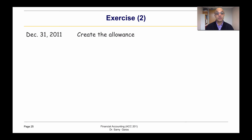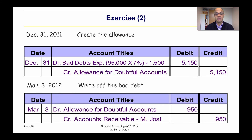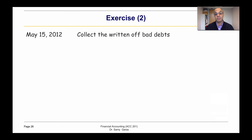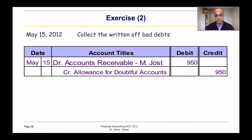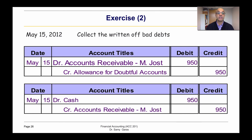Let us look at the journals. On December 31st, to create the allowance, we debit bad debt expense and credit allowance — remember, because the balance was credit we subtract. On March 3rd, to write off the account, we debit allowance and credit accounts receivable by 950. But the customer came back on May 15th and paid, so first we reverse the write-off journal and then we record the cash collection.